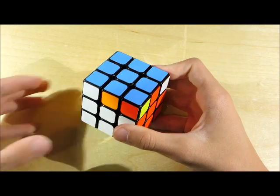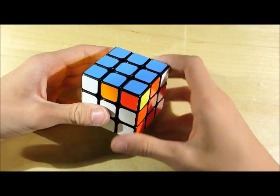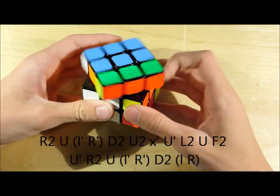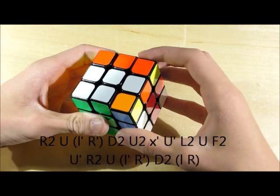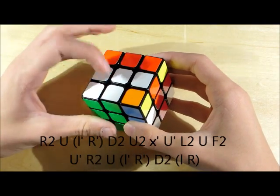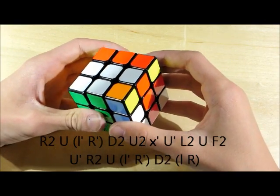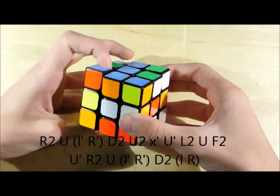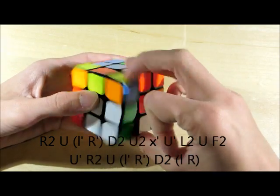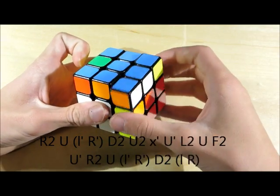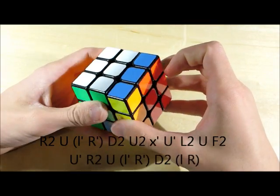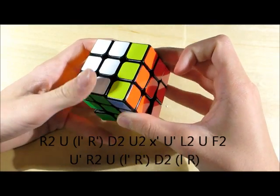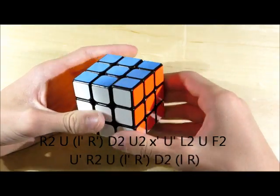So the algorithm that's going to be used for this is going to be R2, U, lowercase l prime, sorry, D2, U2, x prime, U prime, L2, U, F2, U prime, R2, U, lowercase l prime, R prime, D2, lowercase l, R. And as you can see, that solved the case right here.